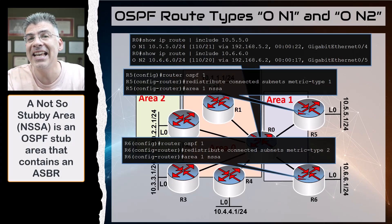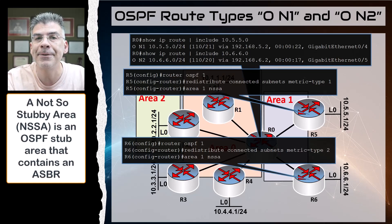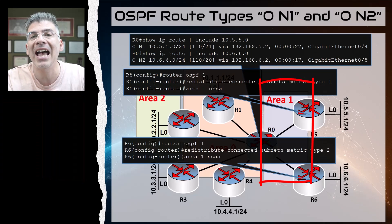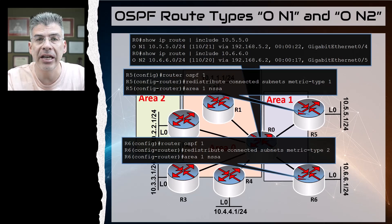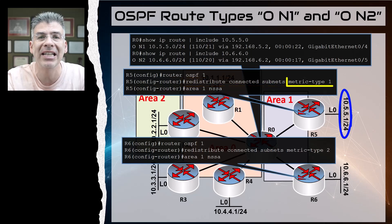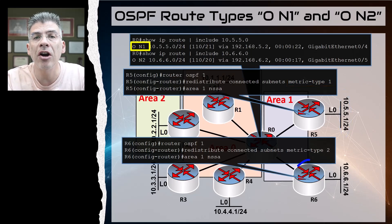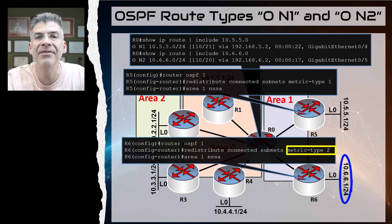Briefly, an NSSA is a stub OSPF area that has an ASBR. In this topology, area 1 is configured as an NSSA. On R5 within this NSSA area, we have configured redistribution using a metric type of 1, which gives us an ON1 type route. Similarly, on R6 we have configured redistribution using a metric type of 2, giving us an ON2 type route.